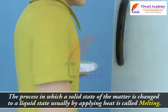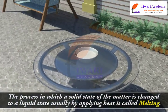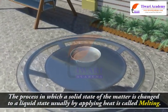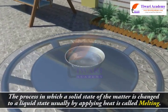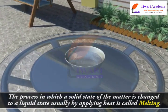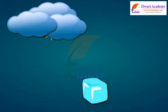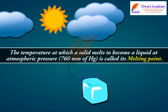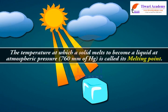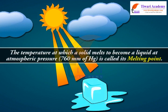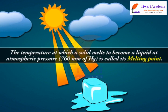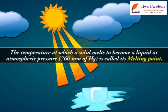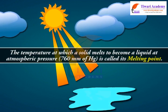The temperature at which a solid melts to become a liquid at atmospheric pressure — 760 mm of Hg — is called its melting point.